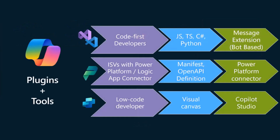We're going to focus on the plugin model today. There are a few different ways to build plugins. The first one I'm going to show is to write something with code — Teams Toolkit makes this a lot easier. The most mature way to do this is really the message extension. You build a message extension for Teams, and then it works also as a plugin.